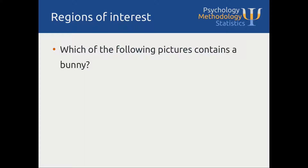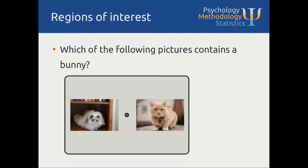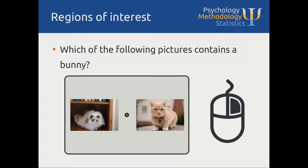First a little bit about regions of interest. Imagine that you have a task where you ask participants which of the following two pictures contains a bunny. You ask participants to respond with the mouse — more precisely you want them to click on the image that they think contains a bunny. As a researcher you are most interested in mouse clicks on the target, the picture with the bunny, or on the distractor, the picture with the cat.